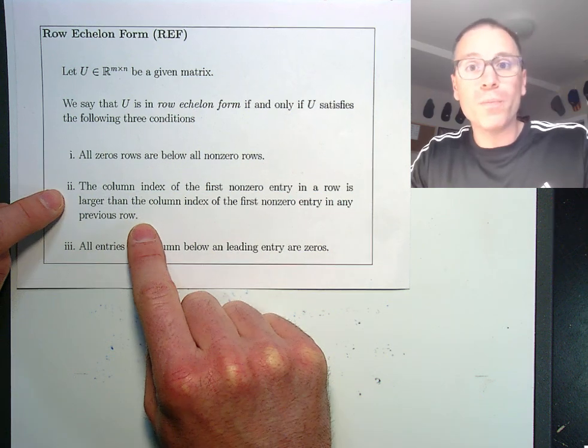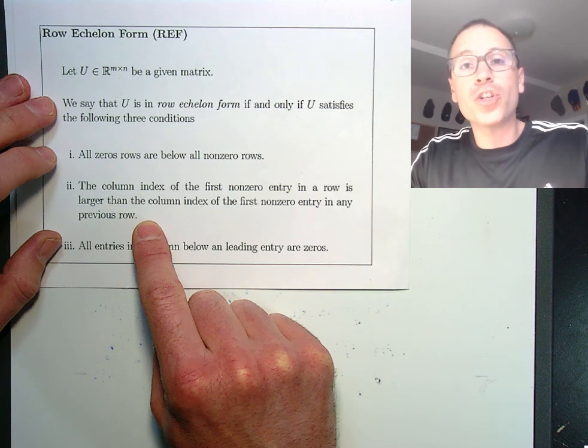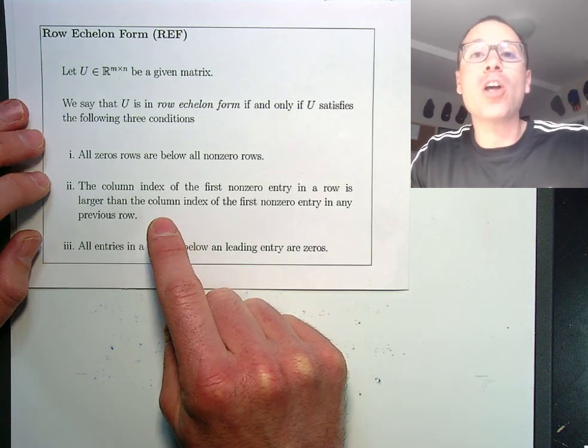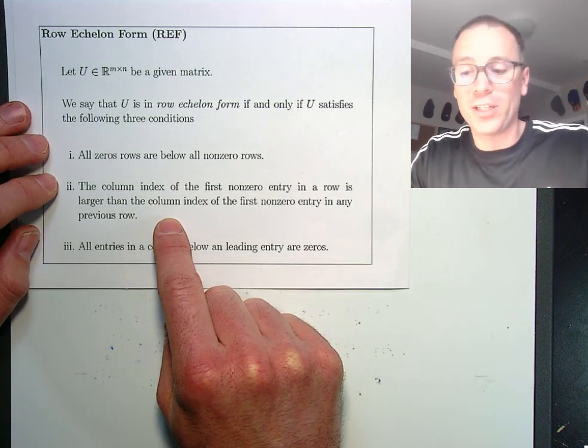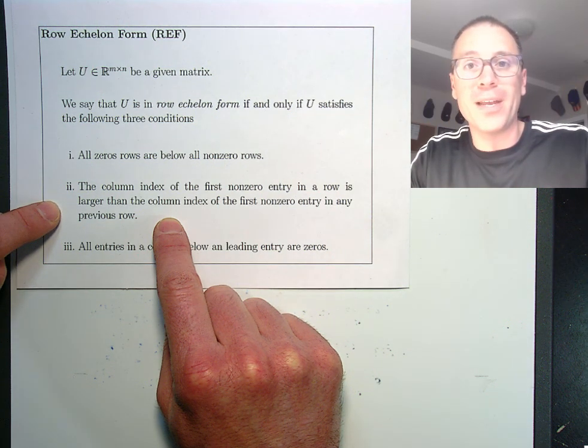Number two, the column index of the leading entry, the first non-zero entry, is larger than the column index for previous leading entries. This is the classic stair-step property that we're going to see in just a minute.